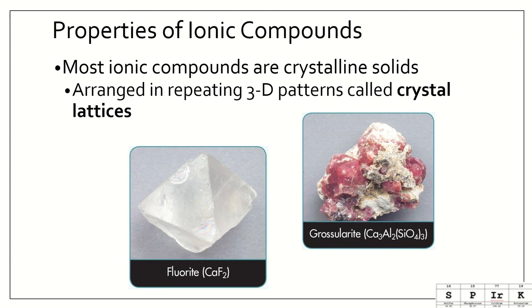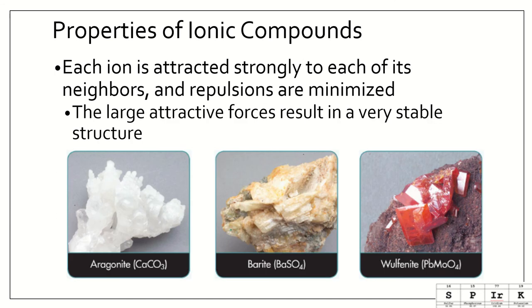So let's talk about properties of ionic compounds. Most ionic compounds are crystalline solids arranged in repeating 3D patterns called crystal lattices. So sort of like we saw with the sodium chloride, we had NaCl repeating itself, forming that cubic shape. So crystals can take lots of different shapes and forms. So each ion is attracted strongly to each of its neighbors, and the repulsions are minimized. The large attractive forces result in a very stable structure. This is why crystals are some of the strongest objects we have or that we know of. So here are a few different examples. And you see some of them have differing colors.